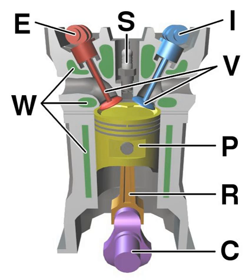Common cylinder configurations include the straight or inline configuration, the more compact V configuration, and the wider but smoother flat or boxer configuration.